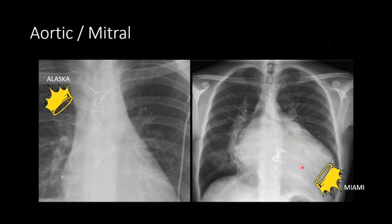A mitral valve is pointing down towards Miami, while the prongs of an aortic valve are pointing up towards Alaska. So this is an aortic valve replacement, and this one is a mitral valve replacement.